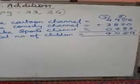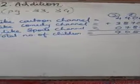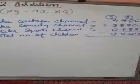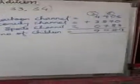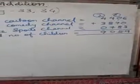How many total number of children were found? Therefore, 9,059 children like to watch these three channels.